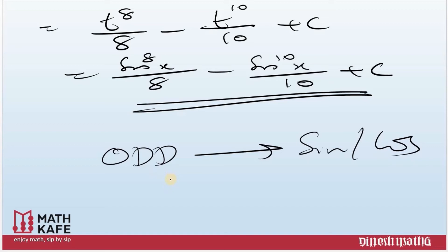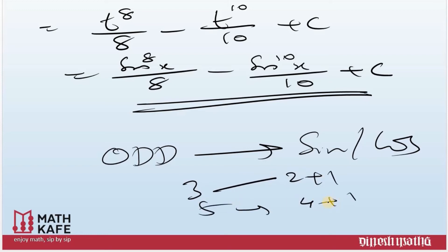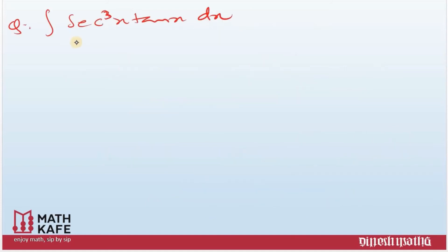This is the technique for odd powers of sine or cosine. Whatever odd power you have - 3, 5, 7, etc. - separate it as 'even plus 1', change the even part using the basic identity, and then get the answer.